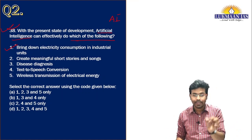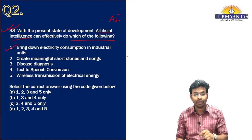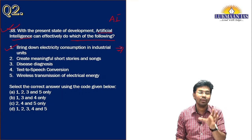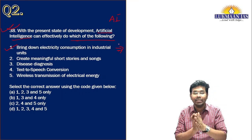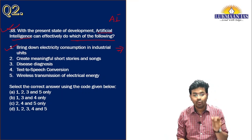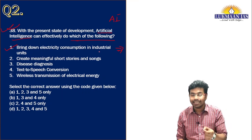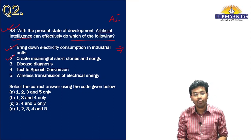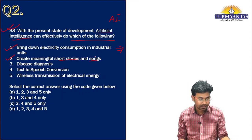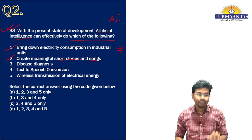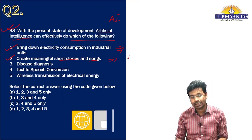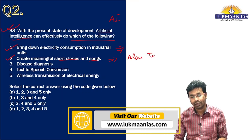After predicting the demand for electricity, we can produce exactly the required amount of energy and distribute it effectively. So we can bring down electricity consumption in industrial units using artificial intelligence. Another application is creating meaningful short stories and songs. For this purpose, there was a person named Alan Turing.